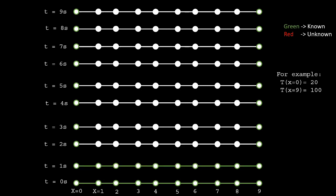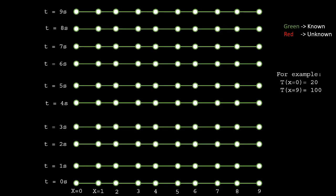For example, at t equals zero, the boundaries are 20 degrees celsius, and then at two seconds, they are equal to 60 degrees celsius, and then until 10 seconds, they will be equal to 100 degrees celsius.